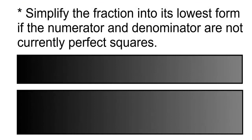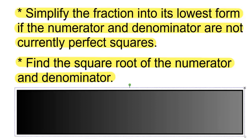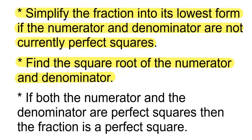Steps. Step number 1: simplify the fraction into its lowest form if the numerator and denominator are not currently perfect squares. Step number 2: find the square root of the numerator and denominator. And number 3: if both the numerator and the denominator are perfect squares, then the fraction is a perfect square.